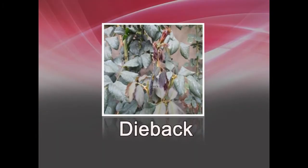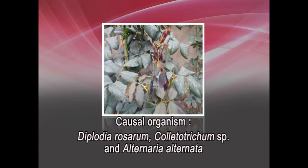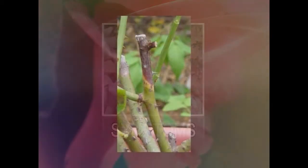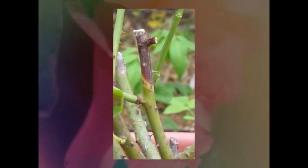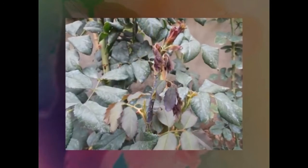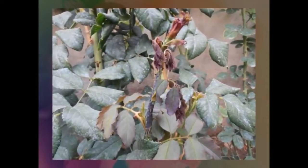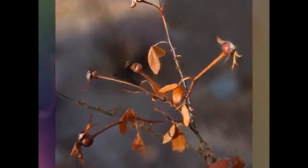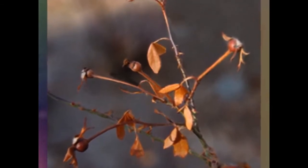The next important disease is die back. Causal organisms are Diplodia rosarum, Colletotrichum species, and Alternaria alternata. The pruned surface of the twig dries tip downwards and twigs become black in color. The disease passes from the branch and twig to the main stem and from there to the root, killing the whole plant. Stem and roots show browning of the internal tissue.